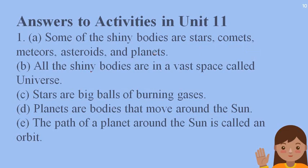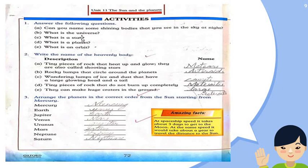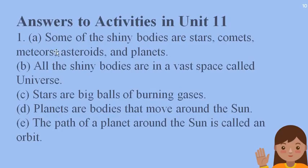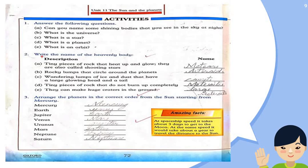Now we will come to Part B. What is the universe? All the shining bodies are in a vast space called the universe. Our earth is also part of the universe. We have also read this.